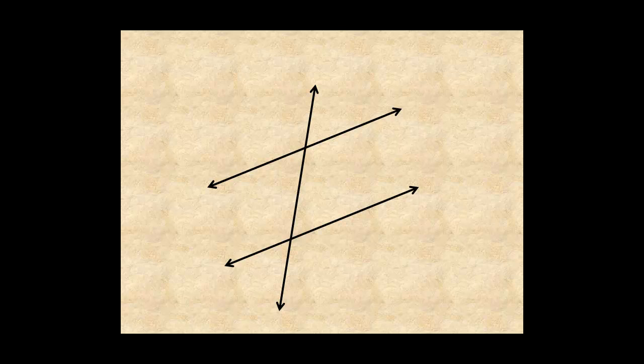These definitions work backwards. If any of the angle pairs defined in this lesson are congruent, like these alternate interior angles, then the lines are parallel.